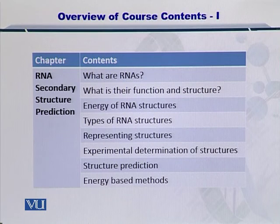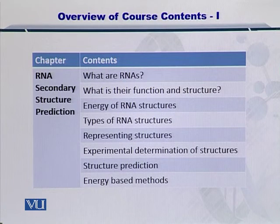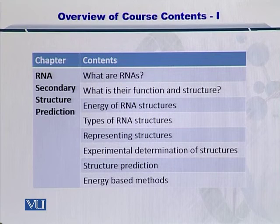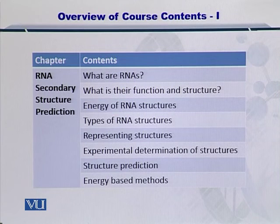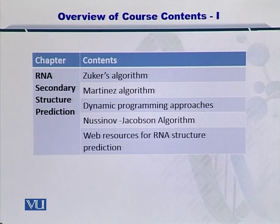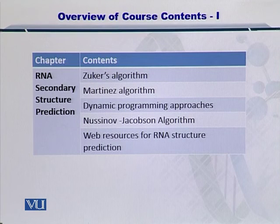In the third chapter, we'll go into the RNA secondary structure prediction techniques. We'll see what RNAs are, their function and their structure, followed by calculation of energies of the RNA structures. We'll also see the various types of these structures and how to represent them, and how the experimental determination of these structures can be done. Then we'll move into bioinformatics tools for structure prediction. The first category will be energy-based methods, followed by three algorithms: Zucker's algorithm, Martina's algorithm, and the Nusinov-Jacobson algorithm — energy-based as well as dynamic programming-based tools to predict the RNA secondary structure.